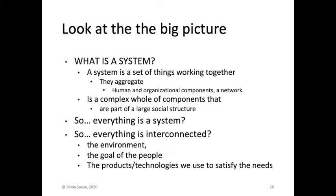It depends on how you see it. If you see it from a larger perspective, then you see a system as everything that involves everything. If you see it from a small perspective, then you see Wikipedia. But Wikipedia can be used inside of this classroom, so it's part of also this classroom system. That's why it's so hard to have this understanding — it's an aggregation of human organizational components, network, and everything together. It can be part of a large society, a permanent society, an educational society.